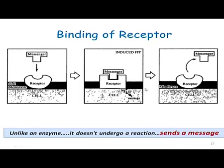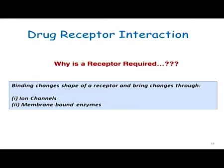The key difference between a receptor and an enzyme is that unlike an enzyme, a receptor molecule does not undergo a chemical reaction. It only sends a message to the cell to act accordingly — it communicates to the cell whatever the messenger molecule has instructed. A receptor can act through modulating ion channels or through modulating membrane-bound enzymes.